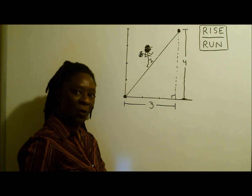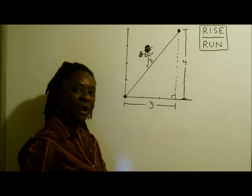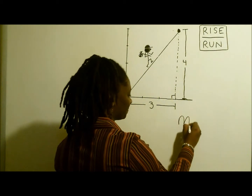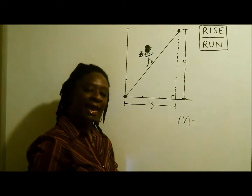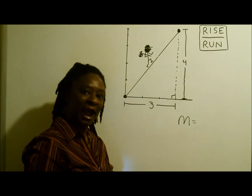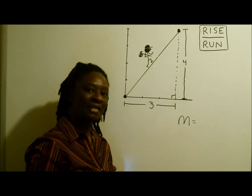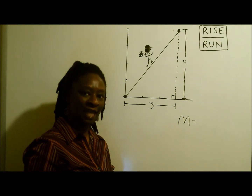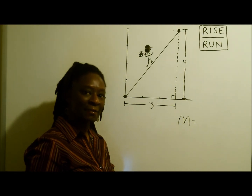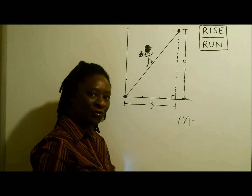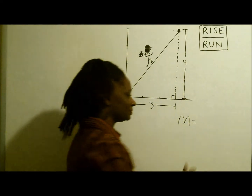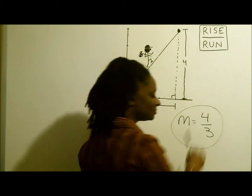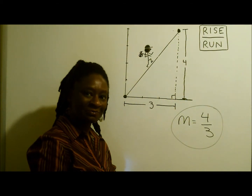The word slope is represented by the variable M. M is derived from the French word 'monter,' which means to mount or to climb. So M equals four over three, and that's our slope.